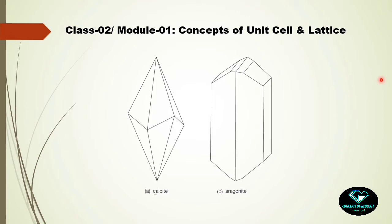A definite question arises: if we keep breaking a large crystal, which will be the smallest representative of the crystal? In the calcite example, if we continue breaking the rhomb we ultimately reach the atoms — calcium, carbon, and oxygen. Are these the correct smallest representatives? The answer is no, because these same elements can also form aragonite, which has an orthorhombic shape — different from rhombohedral calcite. So which will be the smallest representative?